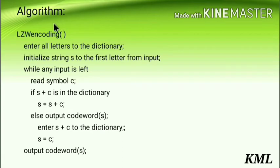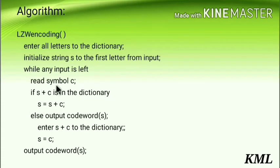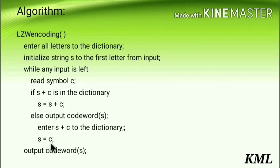Here I have the algorithm for LZW encoding. Enter all letters to the dictionary. Initialize string S to the first letter from input. While any input is left, read symbol C. If S plus C is in the dictionary, S equals S plus C. Else, output code word of S, enter S plus C to the dictionary, S equals C, and output code word of S.